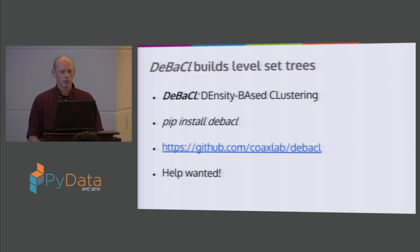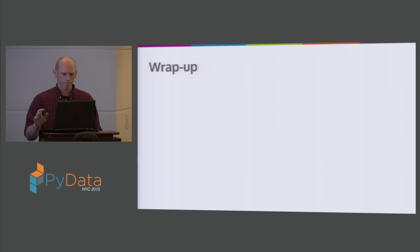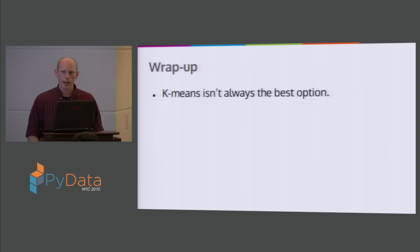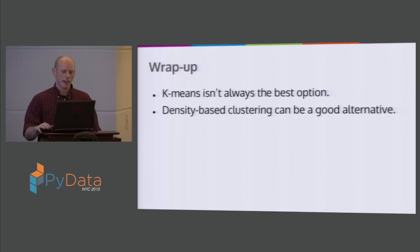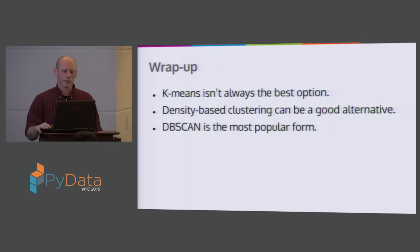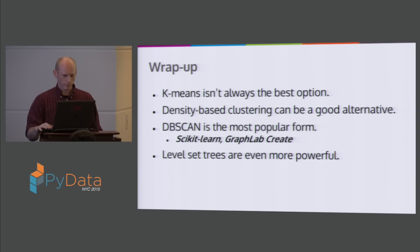That's pretty much it. Debacle is my own package — pip install debacle. Help is definitely wanted if you're interested. The wrap-up: k-means is not always the best option — sometimes it is, but think twice before you use it. Density-based clustering can be a good alternative. DBSCAN is the place to start — check out the code in scikit-learn and GraphLab Create. And check out level set trees and debacle if you're interested.